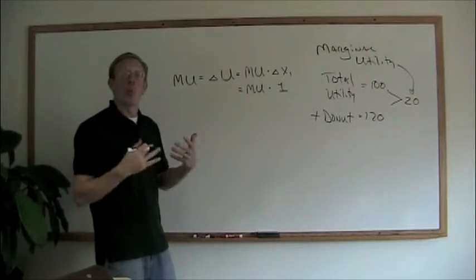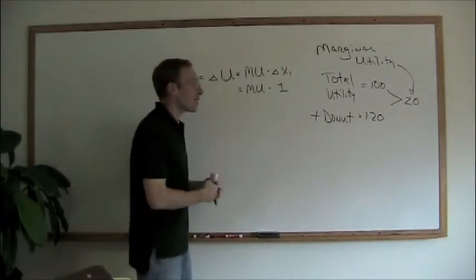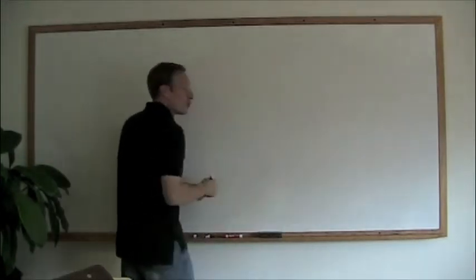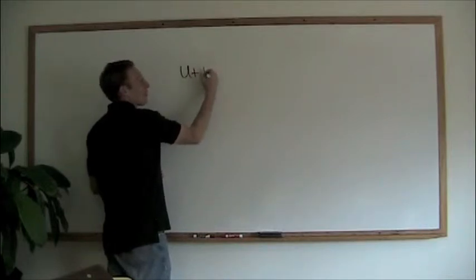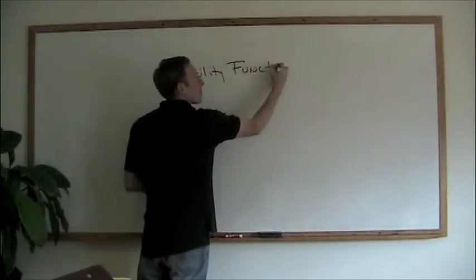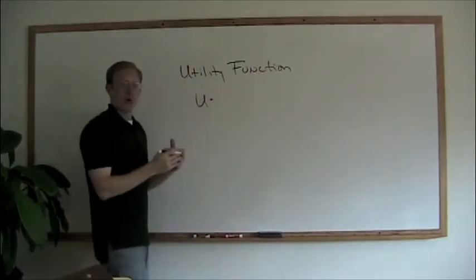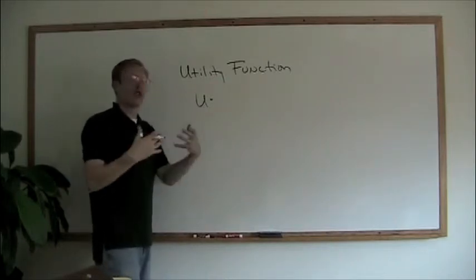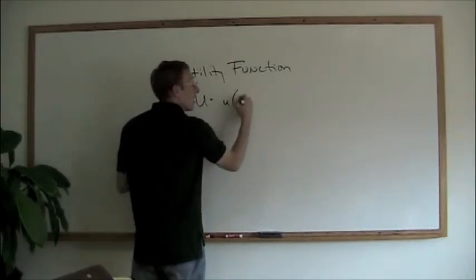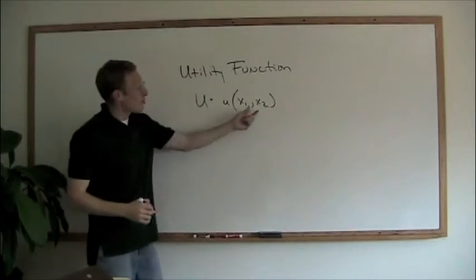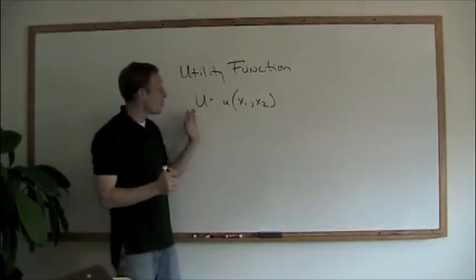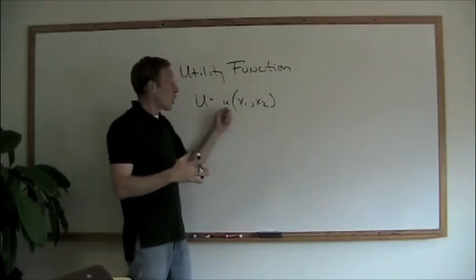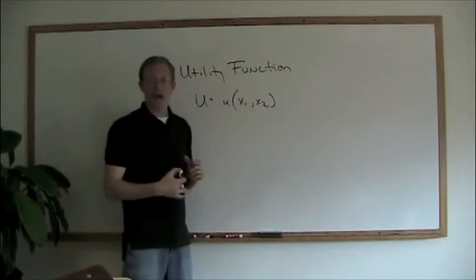When we deal with indifference curves, a utility function is a mathematical representation of total utility. A simple utility function looks like this: utility is equal to u(x1, x2). This means that utility is a function of the two goods x1 and x2 — your happiness comes as a result of consuming x1 and x2. That's our utility function.